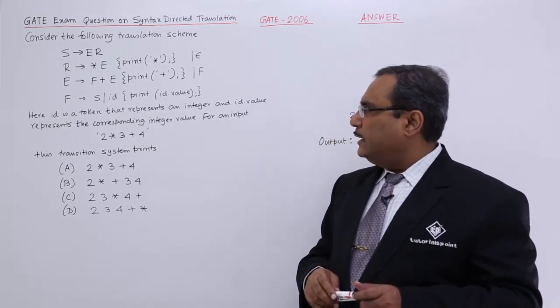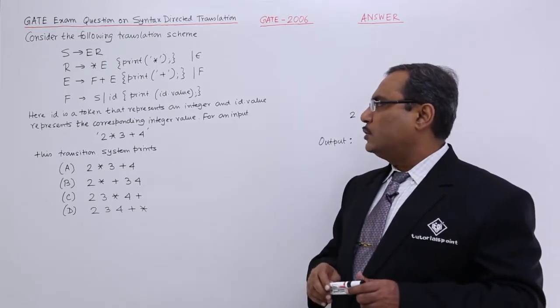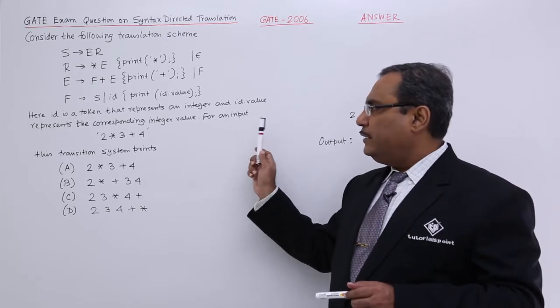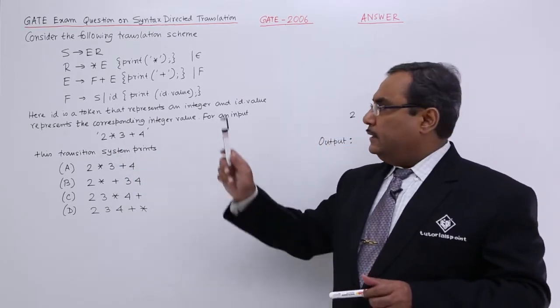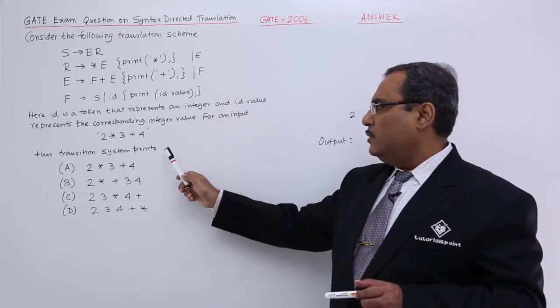Here ID is a token that represents an integer and ID dot value represents the corresponding integer value. For an input string 2 star 3 plus 4, this particular transition scheme will print.